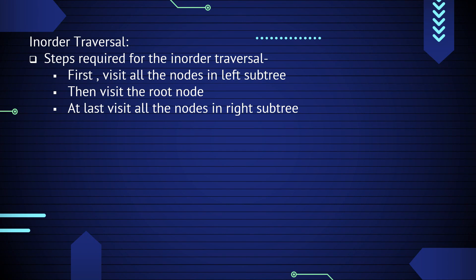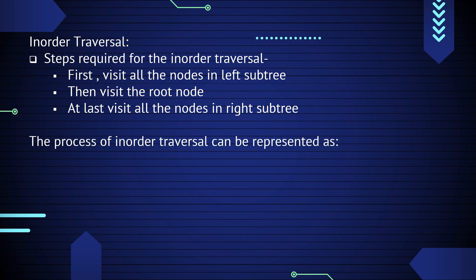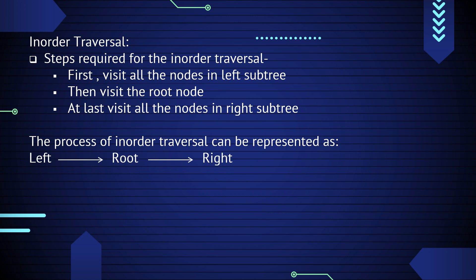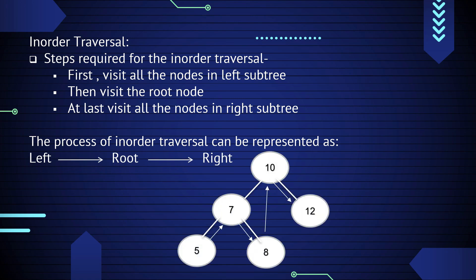The second type is in-order traversal. The steps required are: first visit all nodes in the left subtree, then visit the root node, and at last visit all nodes in the right subtree. The process of in-order traversal can be represented as Left-Root-Right. Here is a diagrammatical representation of in-order traversal.